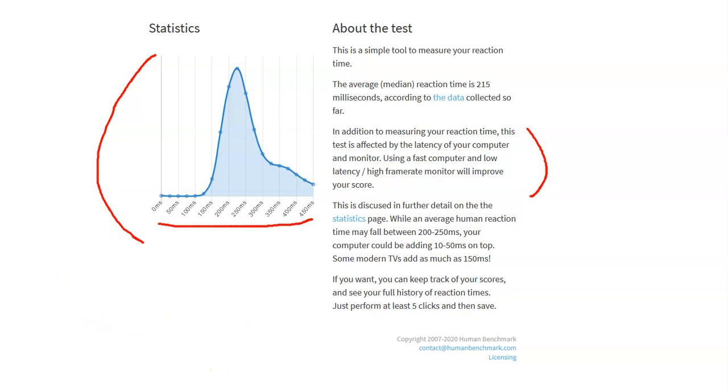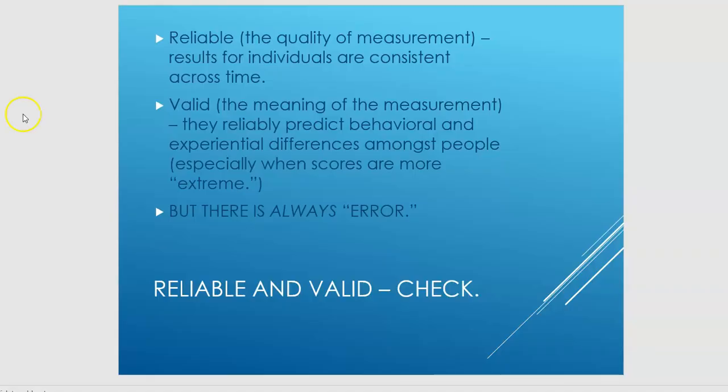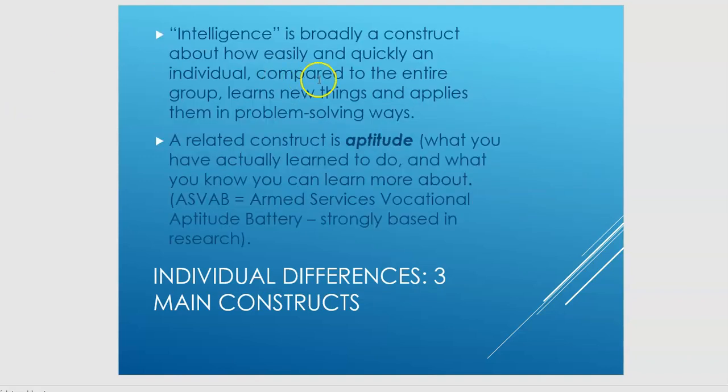And that really is very similar to what we're talking about in terms of error for psychological testing. So, if intelligence is a construct about how easily and quickly an individual learns to do new things, one of the things about an intelligence test is that we time them. And we have a test administrator there with a stopwatch. And she or he's not always going to be perfect in pressing the on and off in the stopwatch.